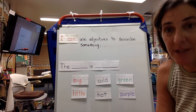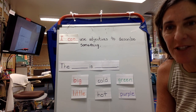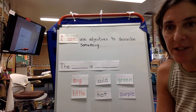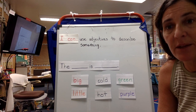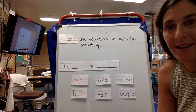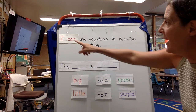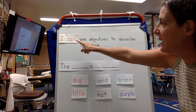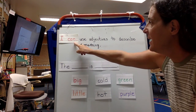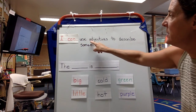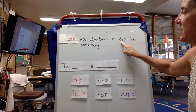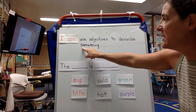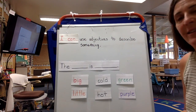Hello! We're going to continue to use adjectives. Adjectives are words that tell what something looks like — they describe it. So our I can statement: I can use adjectives to describe something.